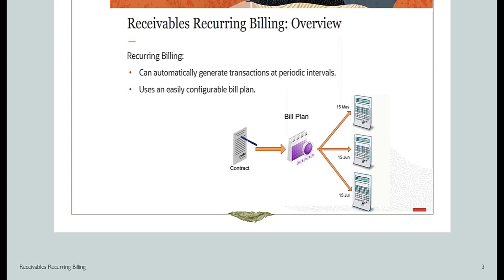Recurring billing functionality in Receivables allows you to create invoices on a cycle count basis for a fixed period of time. The number of invoices generated and the time range assigned to the bill plan depends on the negotiations with your customer. A recurring bill plan can generate invoices based on a frequency — examples include quarterly, monthly, weekly, and so on. If during the life of the contract the terms change, you can easily update the pay plan and continue to generate invoices according to the modified terms.